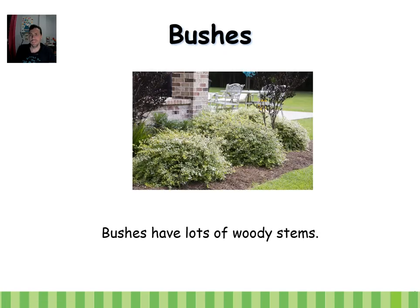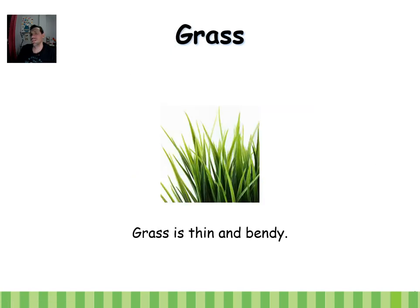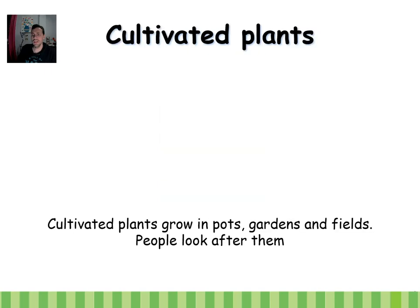Bushes have lots of woody stems — many stems: one, two, three, four, five, six — a lot of stems. And grass is very thin and bendy. It can bend with the wind; you can bend the grass.